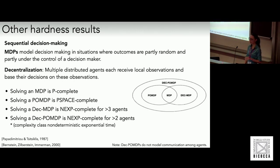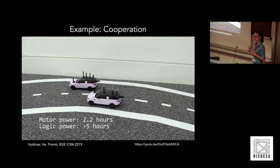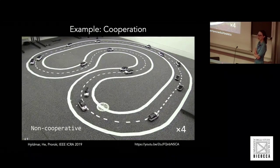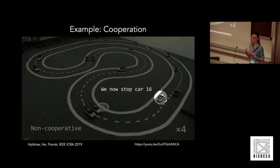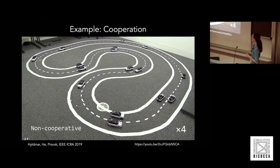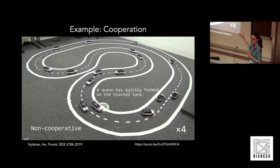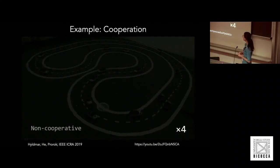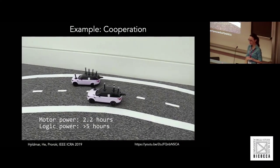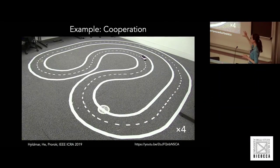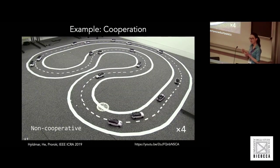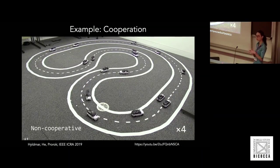Now let me talk about cooperation with a short video. This is a miniature highway from work in my lab. We wanted to model what happens to traffic systems when vehicles use egocentric driver models — no cooperation — where every driver just wants to get home as quickly as possible. One of the cars breaks down, creating a bottleneck. Cars queue behind it because cars in the outer lane keep their current speed, and inner-lane cars have no safe interval to maneuver out.